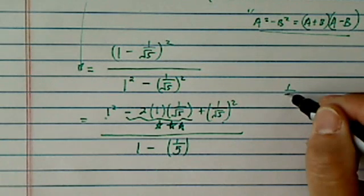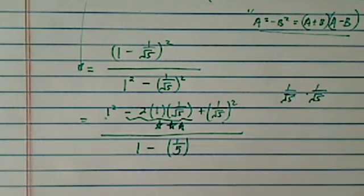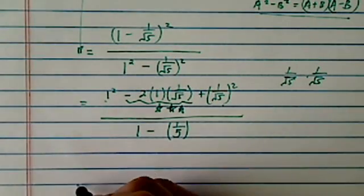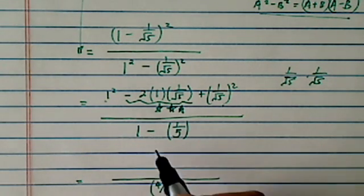we're going to have 1 minus 1 over 5. Okay, because 1 over radical 5 times 1 over radical 5, the radical gets away. Okay. Now on the bottom, we have 4 over 5.